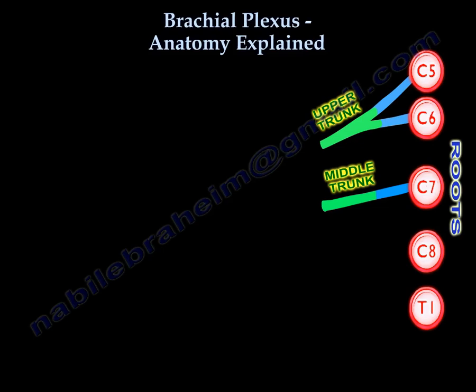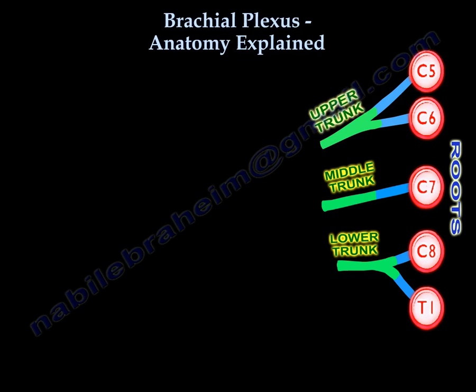C8 and T1 join, so the lower two roots unite to make the lower trunk. Now we have three trunks: the upper trunk, the middle trunk, and the lower trunk.